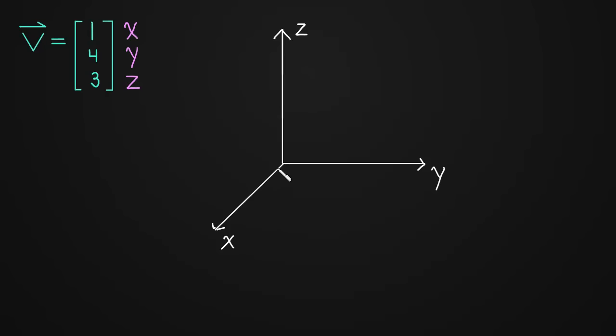And to graph this, all we need to do is move over 1 in x and 4 in y. So that takes us to about this point. And I'm going to draw a line from the origin to that point where we've moved to.